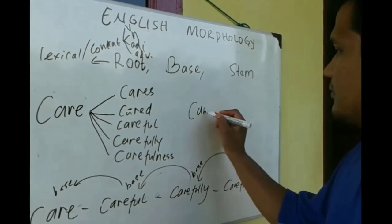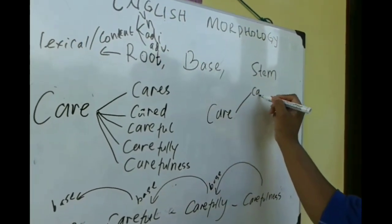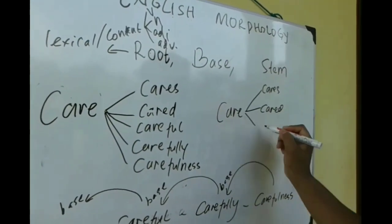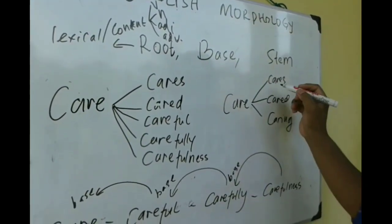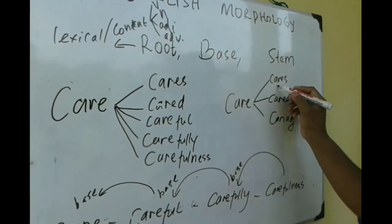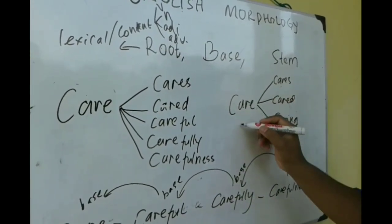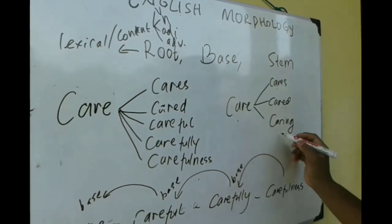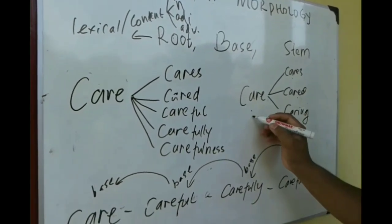For example, care. Cares. Caring. What is the stem for all this? The stem for cares is care. The stem for cared is care. The stem for caring is care.